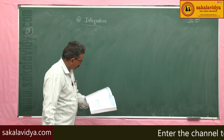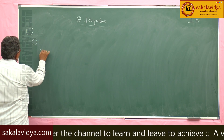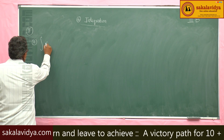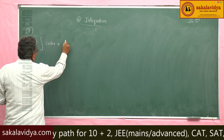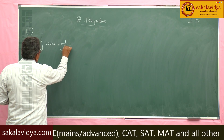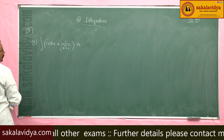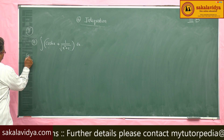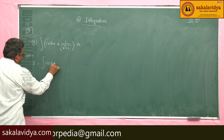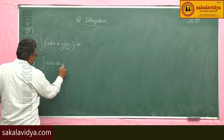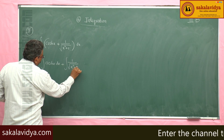Next problem, the eleventh one: evaluate the integral of (cosh x + 1/√(x² + 1)) dx. Solution: I is equal to the integral of cosh x dx plus the integral of 1/√(x² + 1) dx.